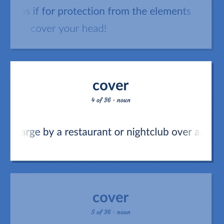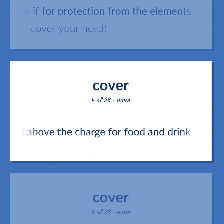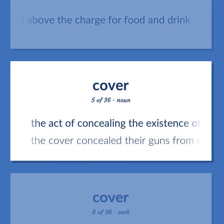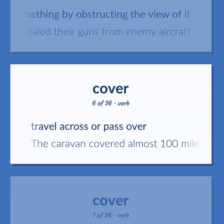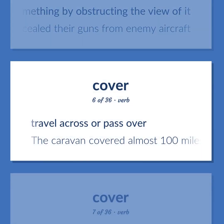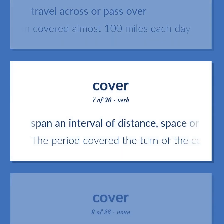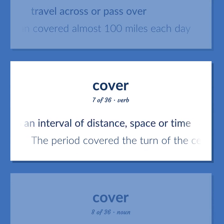A fixed charge by a restaurant or nightclub over and above the charge for food and drink. The act of concealing the existence of something by obstructing the view of it. The cover concealed their guns from enemy aircraft. Travel across or pass over. The caravan covered almost 100 miles each day. Span an interval of distance, space, or time. The period covered the turn of the century.